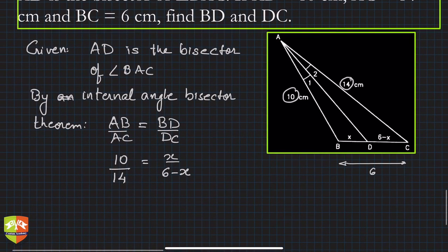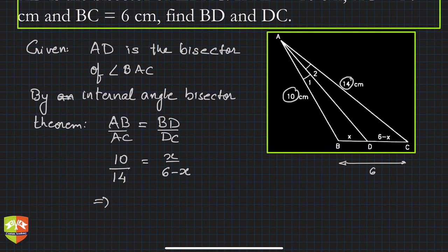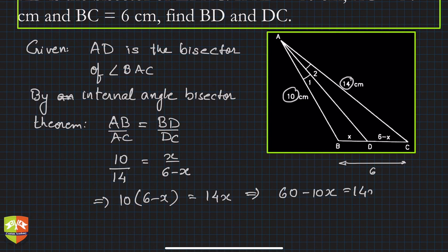If you cross multiply you'll get 10 times 6 minus x equals 14 times x. So from here we see 60 minus 10x equals 14x. If you simplify this will become 24x equals 60, so x equals 60 upon 24, which is 5 upon 2, that means x is 2.5 centimeter.